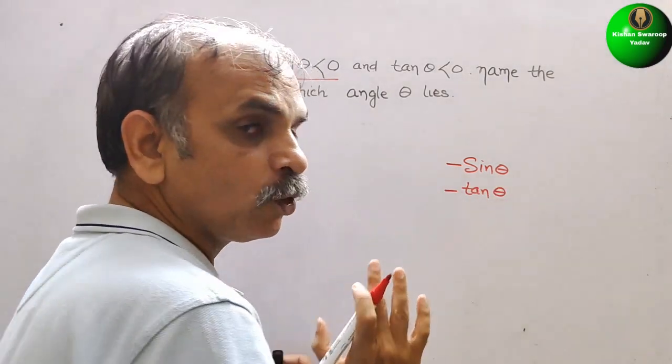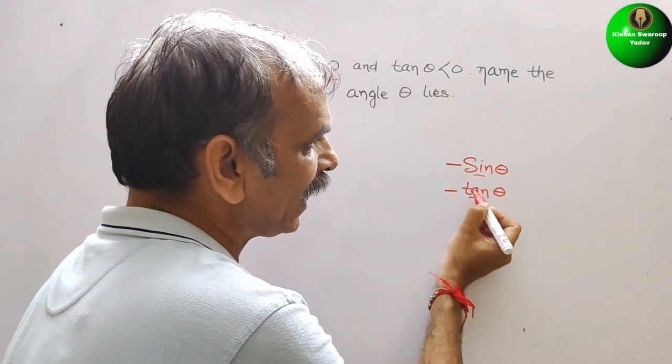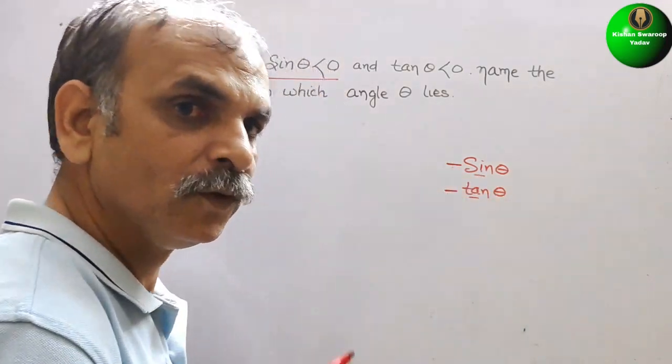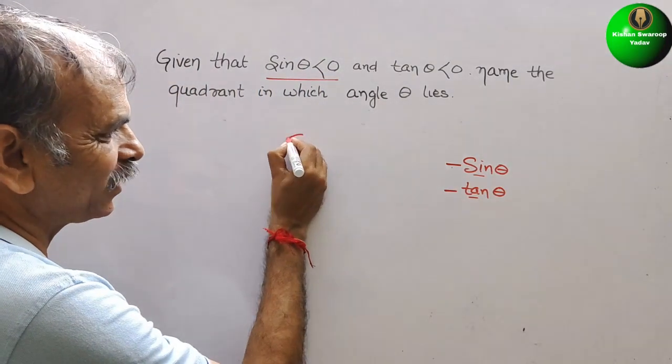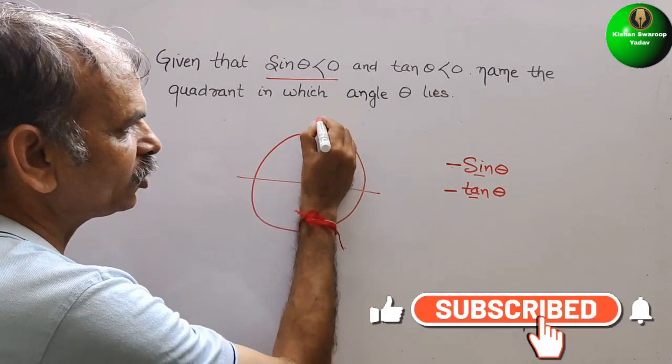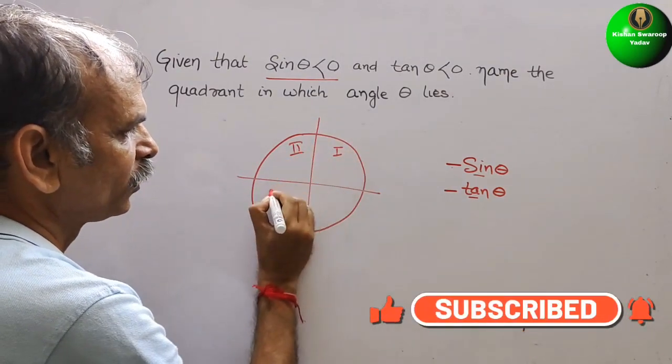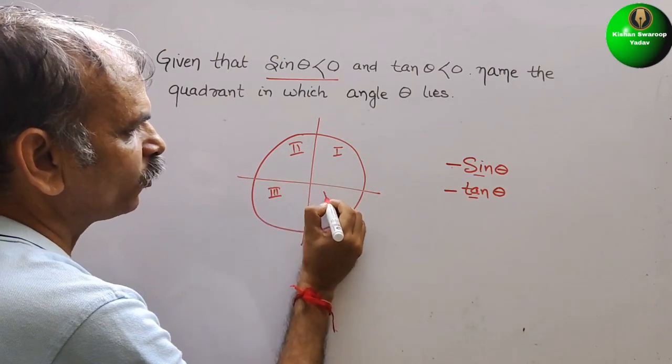So we have to find out where both sin and tan will be negative. So we know the cycle of that. So this is your cycle and this is your quadrant. This is your first quadrant, second, third, and the fourth.